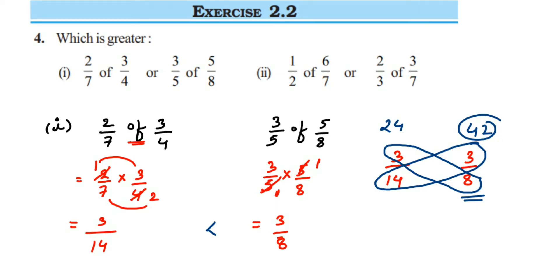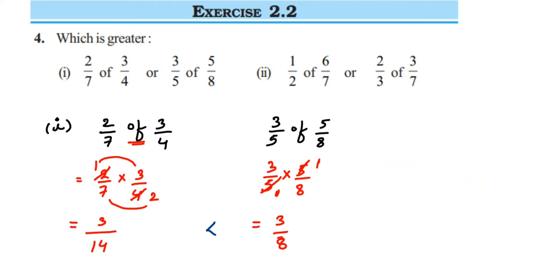This is called the butterfly method — you just cross multiply to compare. So 3 × 8 = 24 and 14 × 3 = 42; since 42 is greater, 3/8 is greater than 3/14. That's it for the first question.